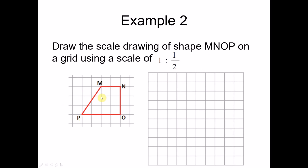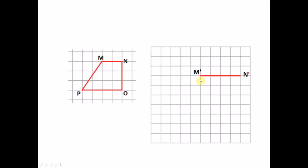Example 2: Draw the scale drawing of shape MNOP on a grid using a scale of 1 is to 1/2. Notice the two grids have the same size. Here, 1 represents 1 unit of the scale drawing and 1/2 represents the unit for the object. So 1 unit of our scale drawing represents half a unit of the object. For side MN, counting the halves: one half, two halves, three halves, four halves — there are four halves, meaning four units in the object.